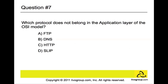Question number seven: Which protocol does not belong in the application layer of the OSI model — FTP, DNS, HTTP, or SLIP? The answer is D, SLIP, which stands for Serial Line Internet Protocol, and it works at the data link layer of the OSI model. All the other protocols work at the application layer.